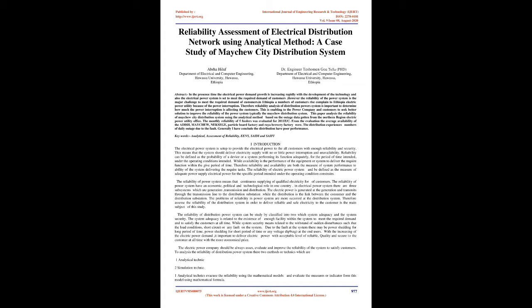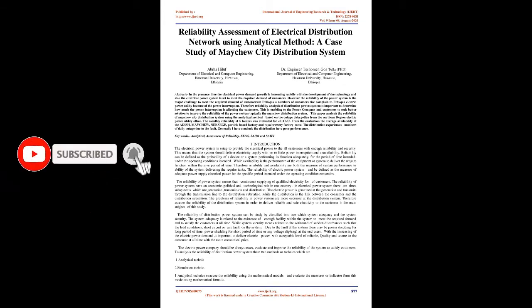This paper analyses the reliability of Macha City Distribution System using the analytical method, based on outage data obtained from the Northern Region Electric Power Utility Office. The monthly reliability of five feeders was evaluated for 2011 E/C. From the evaluation, the average availability of the Utish, Machu, Nexage, Particle Board Factory, and Raya Brewery Factory feeders were assessed. The distribution experiences numerous daily outages due to faults. Generally, the conclusion is that the distribution has poor performance.